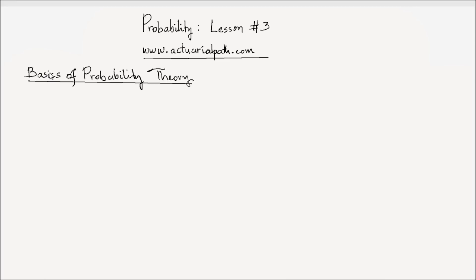Welcome to the third lecture on probability from ActuarialPath.com. In this lesson, we assign probabilities to the events and compound events that we studied in the second lesson — that's what we mean by basics of probability theory. We're going to outline some rules of assigning probabilities to the events that we studied in lesson number two.